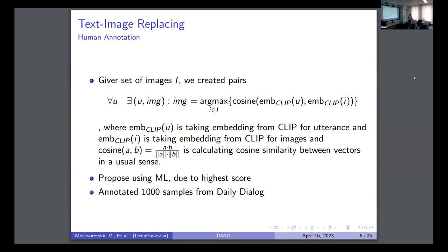And for this, firstly, we have created a set of pairs. For each utterance, we have found an image from our big dataset. An image was found as the argmax for the cosine similarity between embeddings from CLIP, from the utterance and image. And next, we propose to use some machine learning algorithms for classification. For this test, we have annotated a thousand samples from the Daily Dialogue.